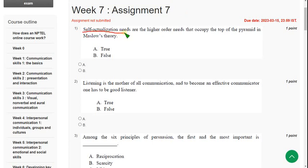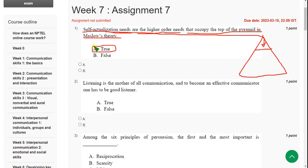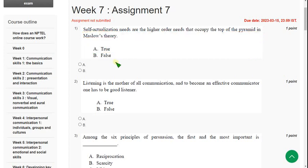So first question. Self-actualization needs are the higher order needs that occupy the top of the pyramid in Maslow theory. So there is a pyramid actually. And the top part of that is self-actualization. So it is absolutely true only. So mark option A.